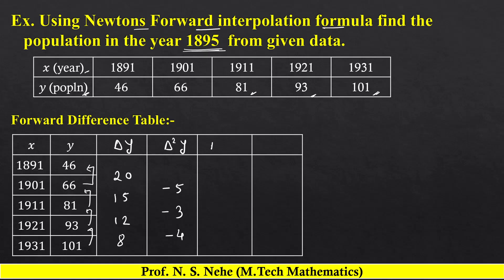Third forward difference Δ³y: minus 3 minus (minus 5) — minus minus plus 5 हो जाएगा — so minus 3 plus 5 which is 2. Next, minus 4 minus (minus 3) — minus minus plus — so minus 4 plus 3 which is minus 1. And the last difference Δ⁴y: minus 1 minus 2 which is minus 3. आप calculator का use करके यह table easily find out कर सकते हैं।